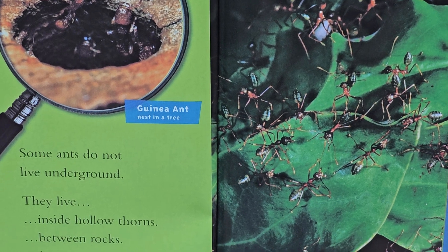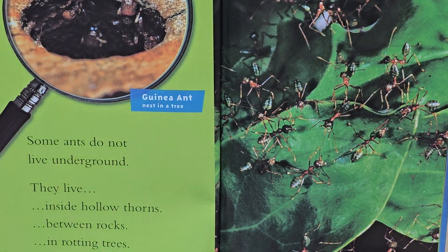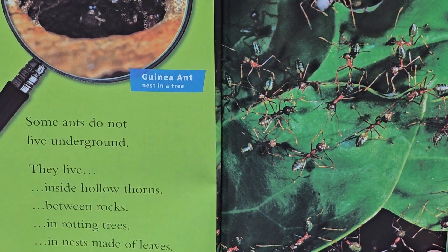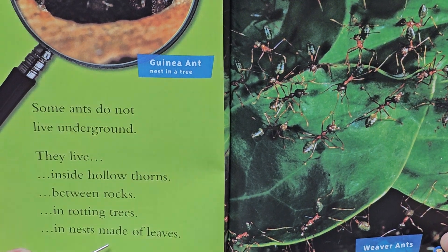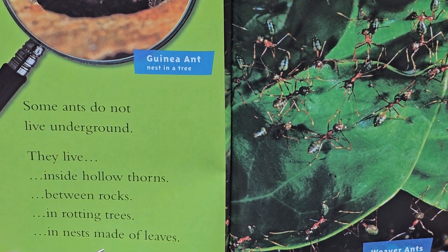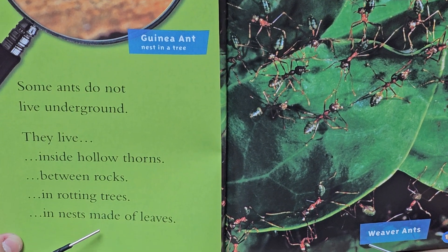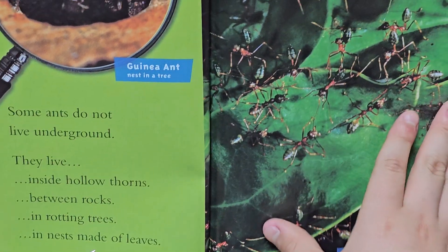Some ants do not live underground. They live inside hollow thorns, between logs and rotten trees, and in nests made of leaves.